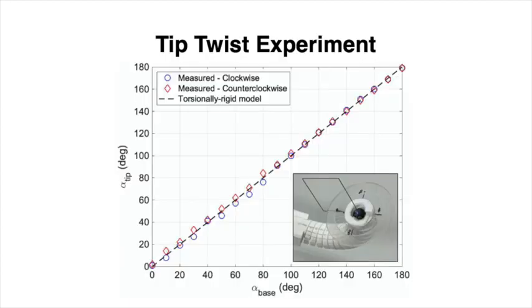To validate our torsionally rigid model assumption, we actuate the prototype over its entire workspace and measure the relative angle between the two bellows at the segment tip, which is represented as alpha tip, and compare this value to the relative angle of the two bellows bases, which is alpha base. If the bellows pair exhibits torsional rigidity with no loss to friction, the tip angle should be equal to the base angle for all base rotations. We use a graduated disk and wire pointer, as shown in the figure inset, to measure the angle change. The maximum difference between actuated and measured tip twist was only 4 degrees, which confirms the assumption of torsional rigidity and negligible frictional effects by exhibiting virtually zero torsional lag.